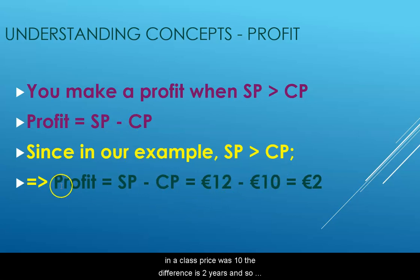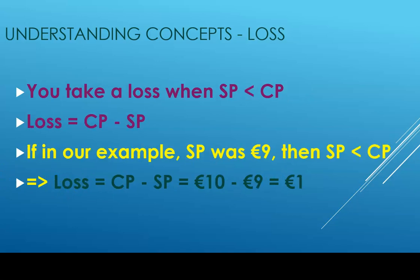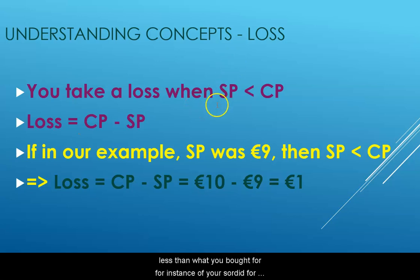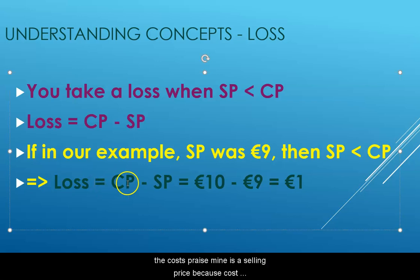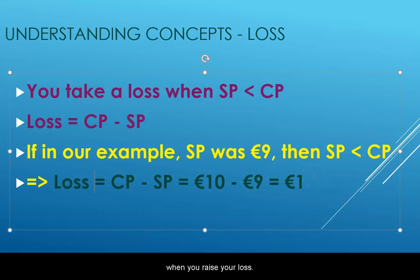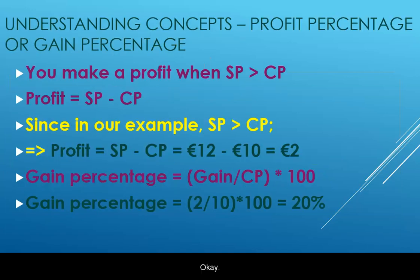In this scenario, since our sale price was twelve euros and the cost price was ten, the difference is two euros and so you made a profit of two euros. On the other hand, if you were to sell the painting for less than what you bought it for — for instance, if you sold it for nine euros — then you incur a loss, calculated as cost price minus selling price, which gives a loss of one euro.